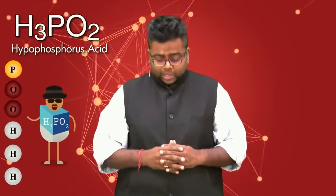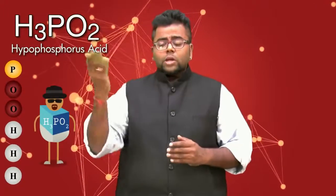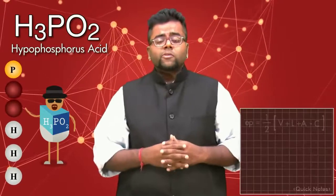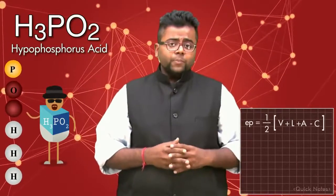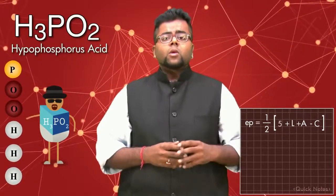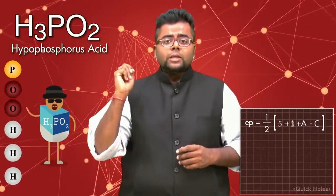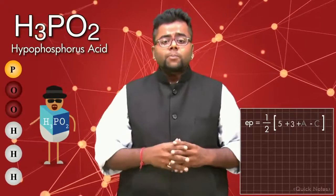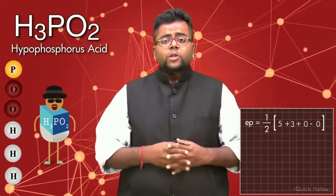Suppose if I take the first acid as H3PO2. In H3PO2, the central atom is phosphorus, and for phosphorus the valence electrons would be 5. So for my formula the value of V would become 5 and the value of L would become 3, because we have H3PO2 and for VSEPR theory you have to forget what oxygen is.